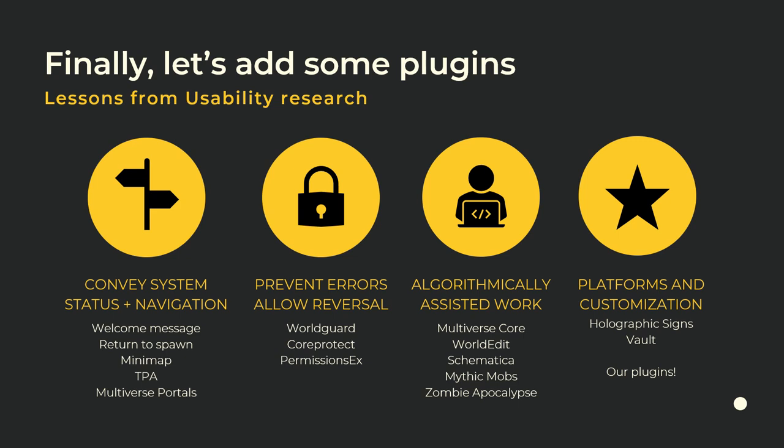Other navigation plugins we've used include TPA — consensual teleporting — where one player can request to teleport to another and the other says yes or no. If they don't want to be found, they can decline, which also helps prevent griefing. Multiverse portals let you create portals between different worlds on the server — a city from one class, a forest from another. Welcome messages let players know what the server is about and what they should do — all very obvious usability stuff, but programmers often don't think about it.